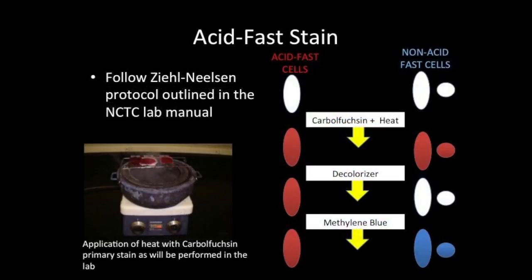The protocol outlined in your lab manual is the Ziehl-Neelsen acid-fast staining protocol. You will heat-fix your bacterial samples before proceeding with the staining procedure. The primary stain used in the acid-fast stain is carbol fuchsin, a dark red dye containing five percent phenol. The carbol fuchsin is lipid soluble, which allows it to penetrate the cell wall. To better facilitate the penetration of the carbol fuchsin into the acid-fast cells that contain mycolic acid, the slide is exposed to steam heat after the primary stain is added. The steam heat serves to melt the wax and allow the dye to enter the cell wall.